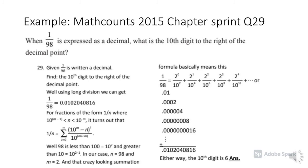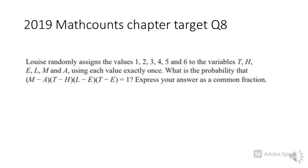Here is a good example of a difficult, challenging, and time-consuming problem. It's from the 2015 Math Counts chapter sprint round, question 29: when 1/98 is expressed as a decimal, what is the 10th digit to the right of the decimal point? Students should either know how to solve it using long division, or they should know some tricks. Here is another example from the 2019 Math Counts chapter target round, question 8, where we need to list multiple cases — it's quite time-consuming and requires analytical and logical reasoning.